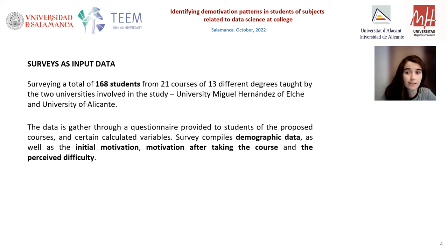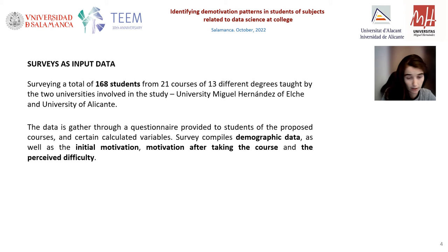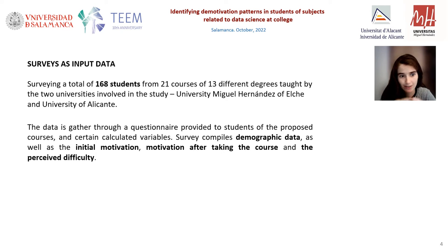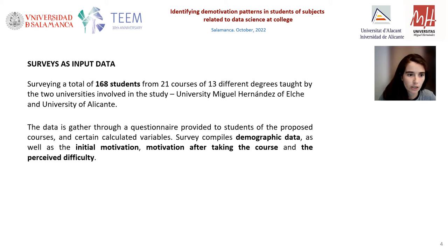The input data comes from a survey of a total of 168 students from 21 courses of the universities involved in the study. Data is gathered through a survey provided to students at the beginning and at the end of the course, along with a set of calculated variables. The survey compiles demographic data as well as initial motivation, motivation after taking the course, and the perceived difficulty level.